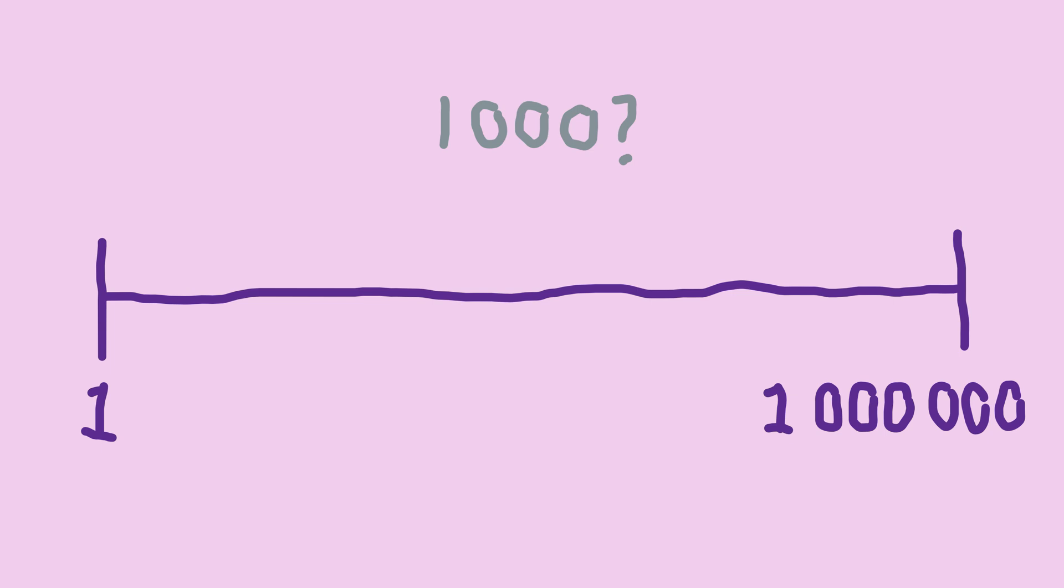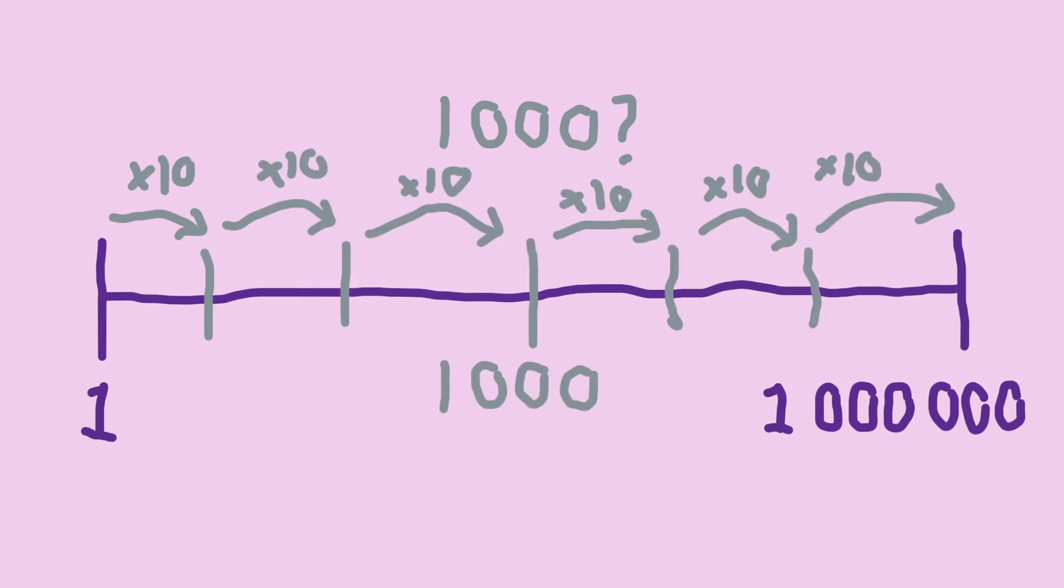Is there a way we can capture this feeling with math? The answer is yes. Instead of your number line adding for each step, you can make your number line multiply. We can pick any number to multiply by, but let's just use 10. Then, a thousand is exactly in the middle. This is called a logarithmic scale.